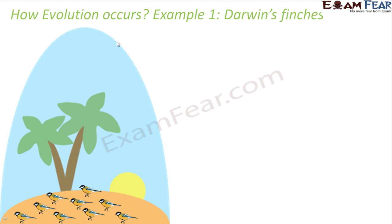The climate was extremely suitable for these finches to survive. There were no predators to eat them, so everything was very good for their survival. The finches started living happily and reproducing rapidly. The number of finches kept increasing, and eventually the island's limited area could no longer support so many finches — there was a scarcity of food.